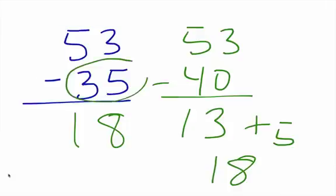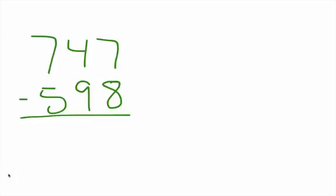Remember, we want to bring this bottom number up to the nearest 10. And then we want to ask ourselves how far do we have to go up, and we're going to add that number at the end. Let's move on.